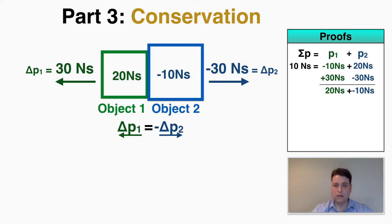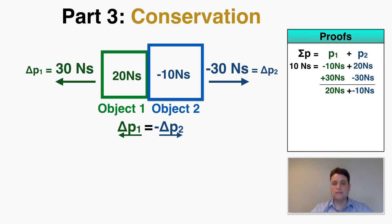When I add these two changes to the two objects, I get a final momentum of 20 Newton-seconds on object one and negative 10 Newton-seconds on object two. I added 30 to object one and took away 30 from object two. The two individual objects now have new individual momentums, but the total momentum in the system didn't change — it's still positive 10. This rule about total momentum staying the same can actually never, ever be broken.